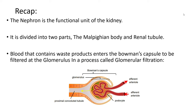Recapping, remember that the nephron is the functional unit of the kidney. This simply means that the nephron is the one that actually carries out the functions of the kidney. It is a small unit of the kidney whereby the blood is filtered, meaning that the waste products in the blood are removed and excreted as urine so that the blood can be cleaned.